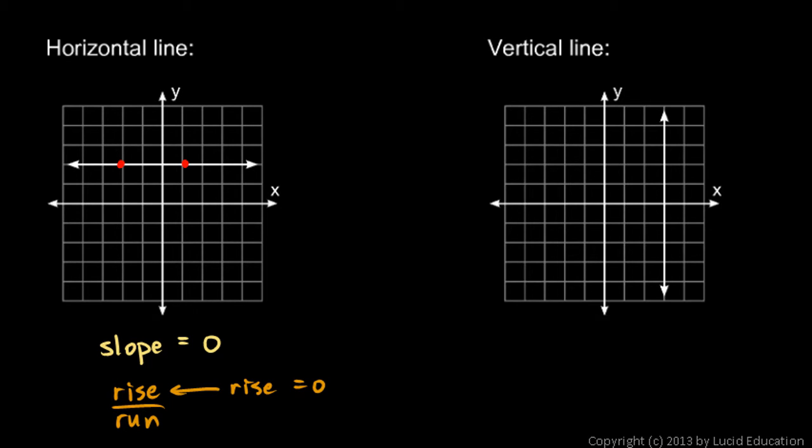And zero over anything is zero. So it doesn't matter what the run is. If the rise is zero, then the slope will be zero. So the slope of a horizontal line is always zero.